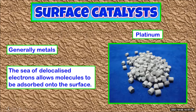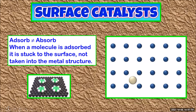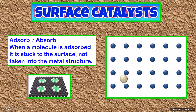Surface catalysts like platinum are metals. Remember the electron sea model of a metal — those delocalized electrons on the metal surface allow molecules to be adsorbed. It's important to know the difference between absorb and adsorb. When a molecule is adsorbed, it's stuck to the surface but not taken into the metal structure. So here we see molecules just stuck to the surface, staying on the surface.